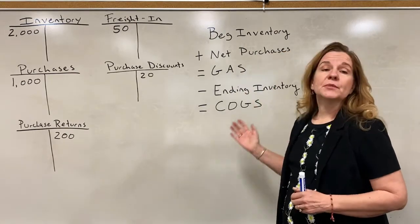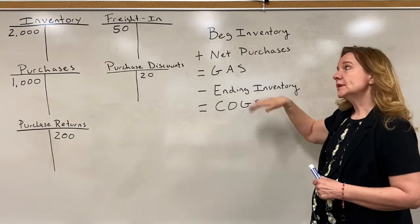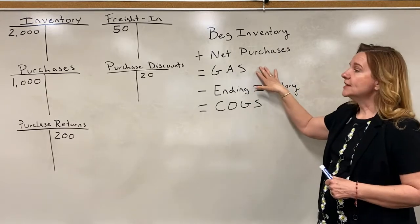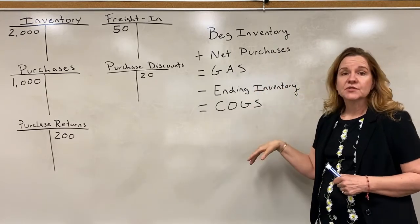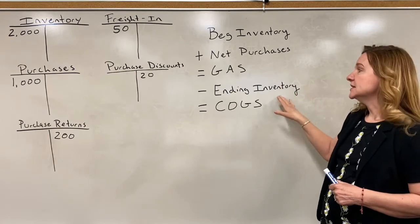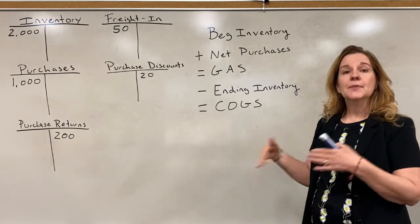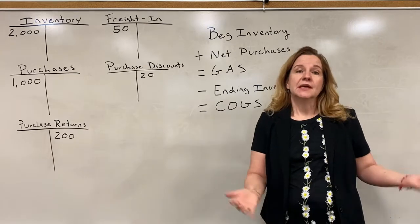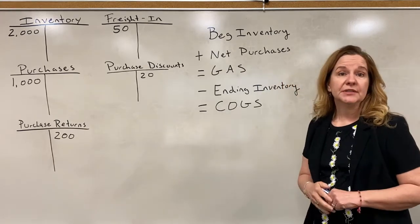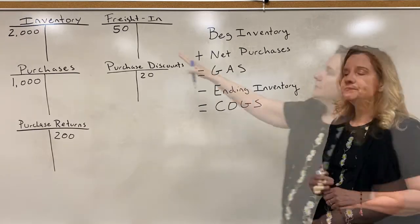Now we're going to look at the formula for inventory. The formula is: beginning inventory plus net purchases equals goods available for sale. From there, we subtract ending inventory — which is figured out by going out and counting the inventory and calculating the cost of what's still available at the end of the period — and that gives us cost of goods sold.